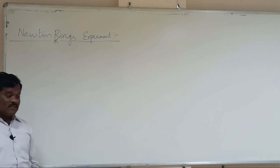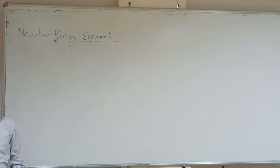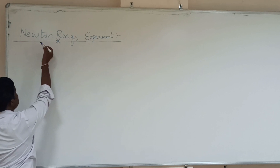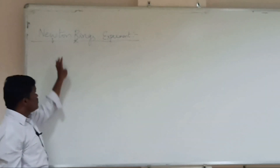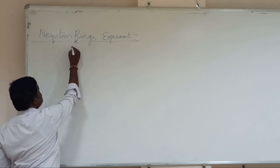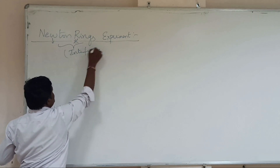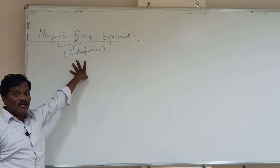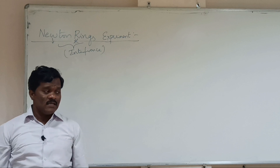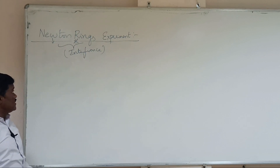In this video we will discuss how Newton Rings work. Newton was a physicist who observed a certain ring pattern based on the phenomenon of interference. As we have already discussed in previous videos, interference is nothing but the superposition of two or more waves.